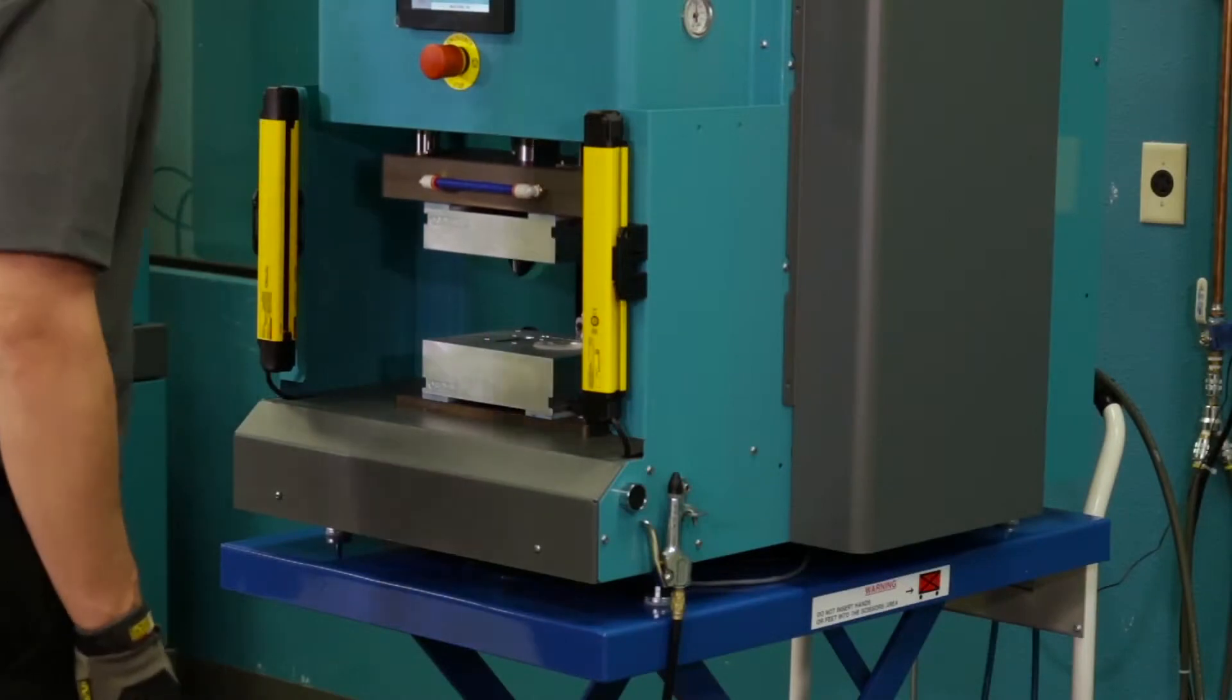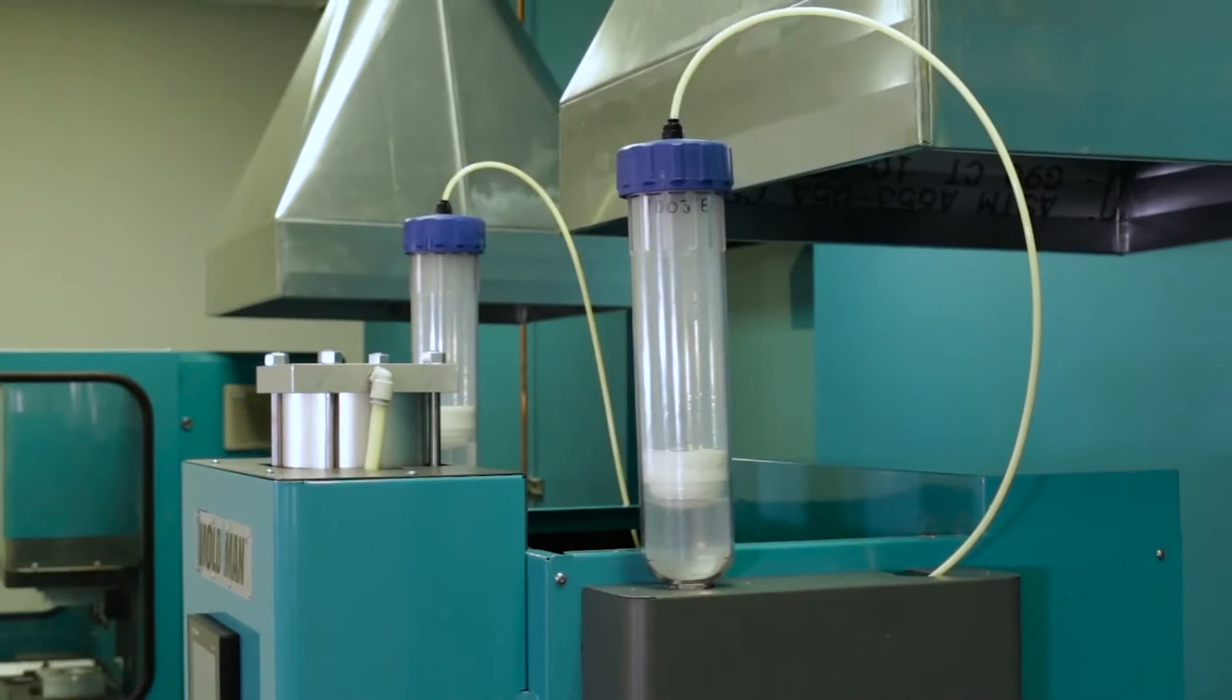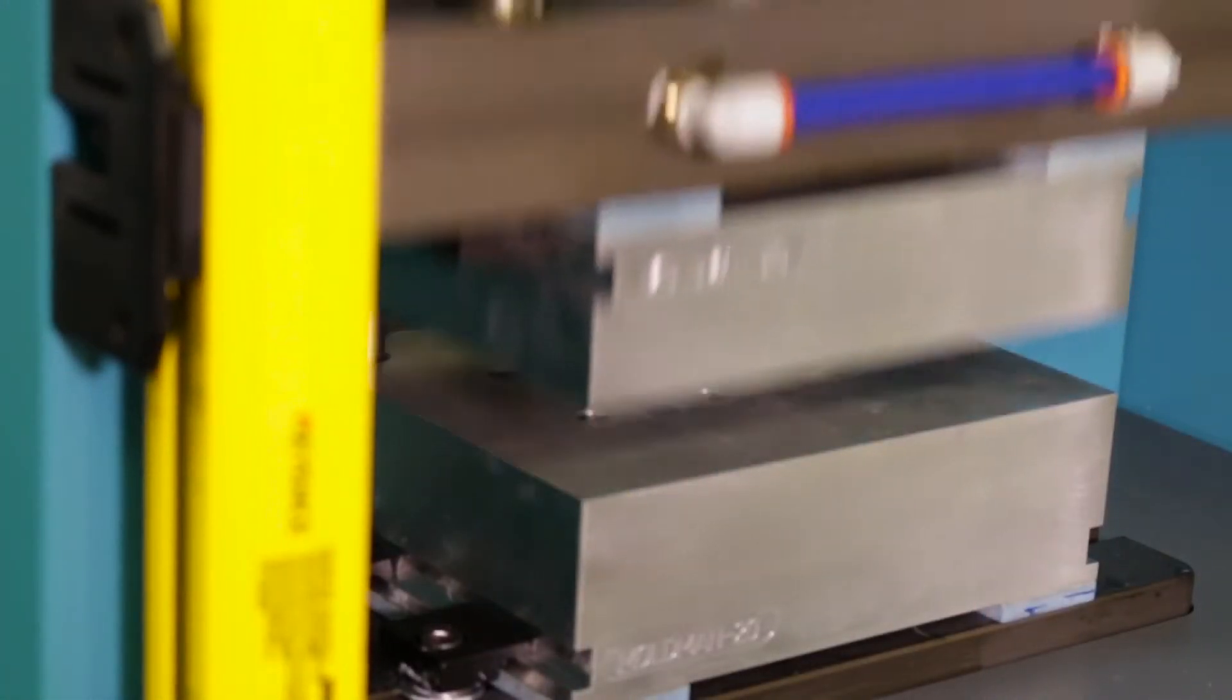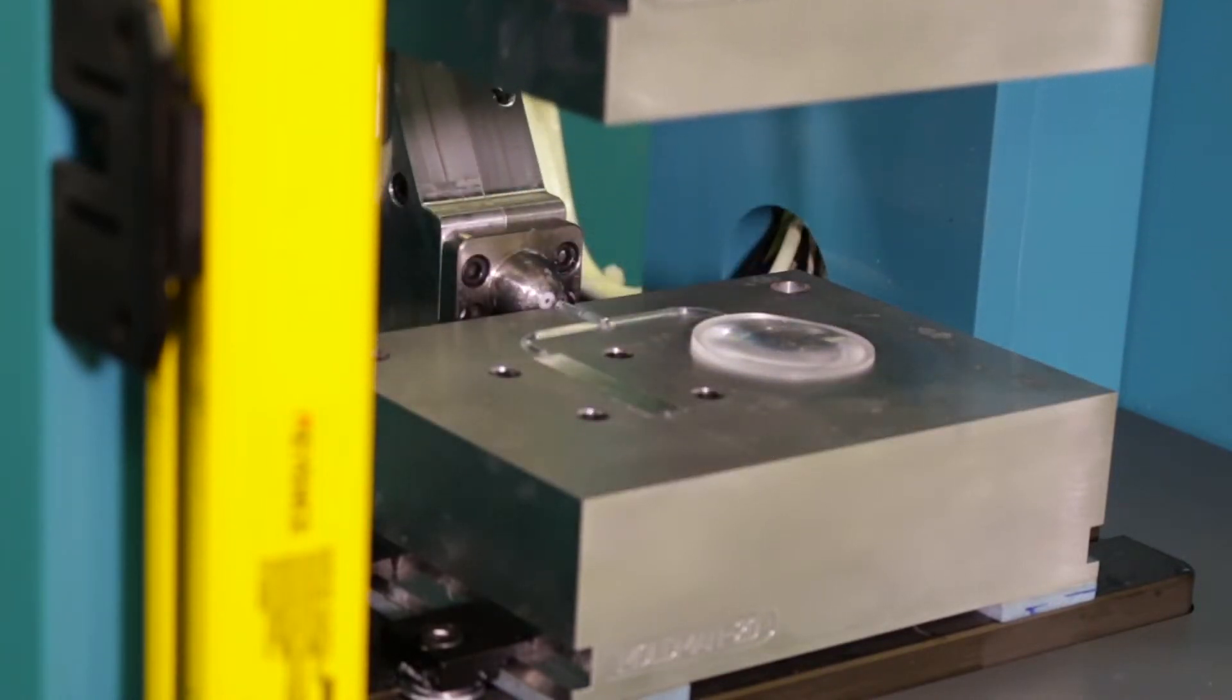It utilizes one-part or two-part thermoset materials. Mold temperature is between 130 and 150 degrees Celsius, allowing for rapid curing and quick cycle times.